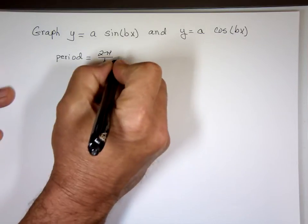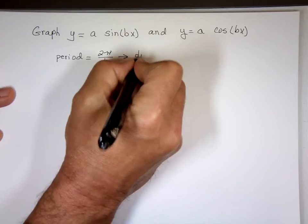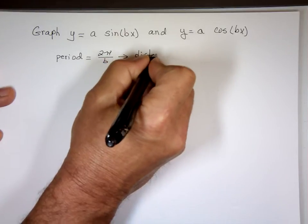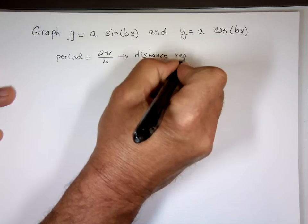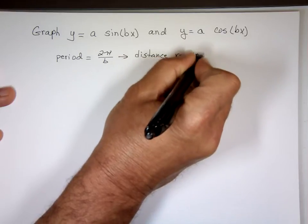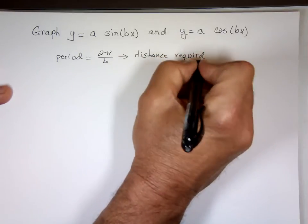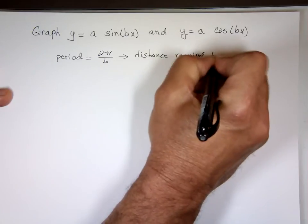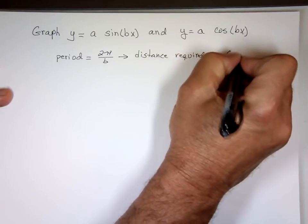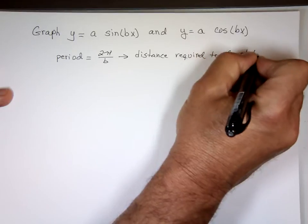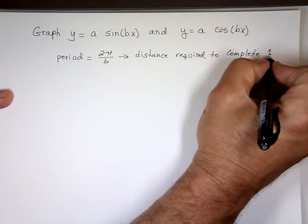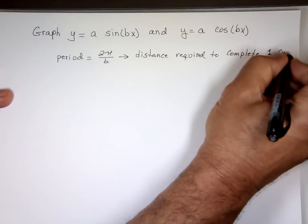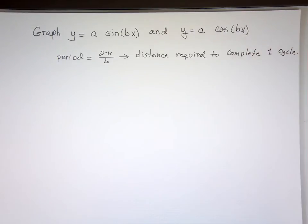So what is the definition of period? It is the distance required to complete one full cycle before it starts to repeat itself.